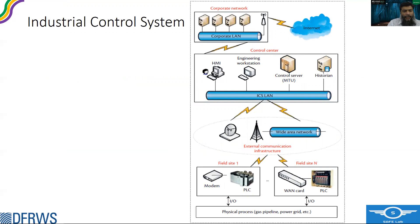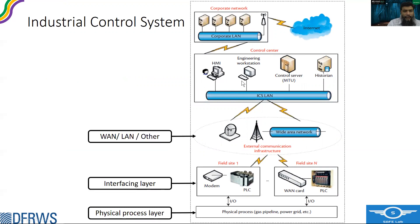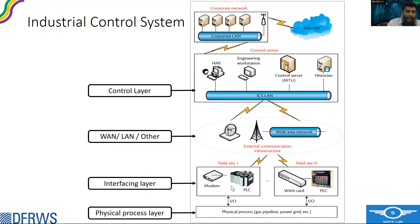An industrial control system is a collection of devices, a variety of networks, and control software to basically operate or automate a physical process. A physical process could be a gas pipeline, power grid, nuclear power plant, water treatment, or any other. These physical or field devices interact with the physical process to connect it to the cyber world, and are connected to a control center that hosts different control software, engineering software, and HMI. This control center is connected to a corporate LAN, which is typically connected to the internet.